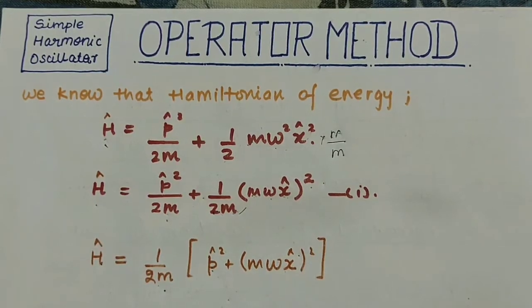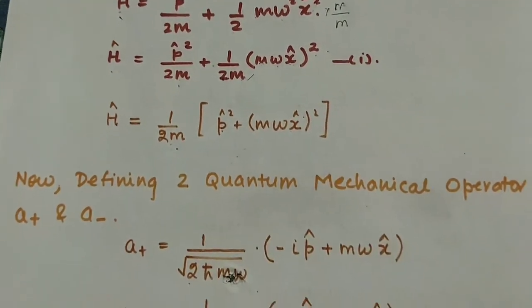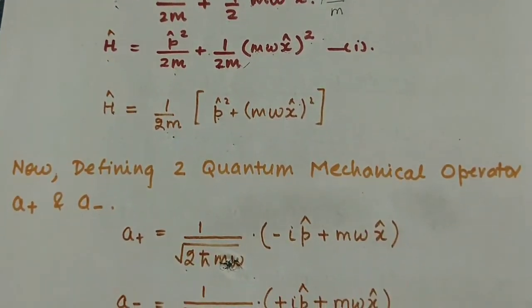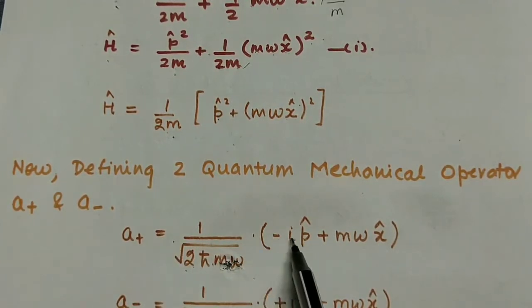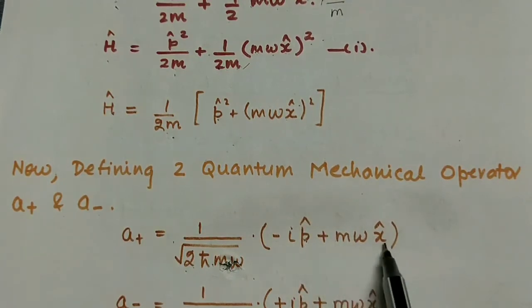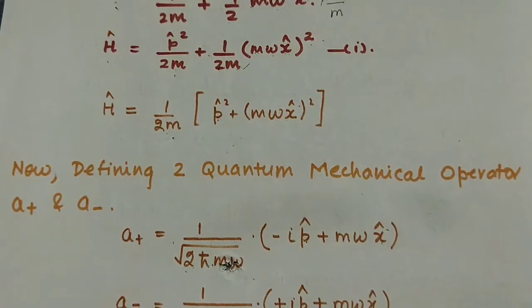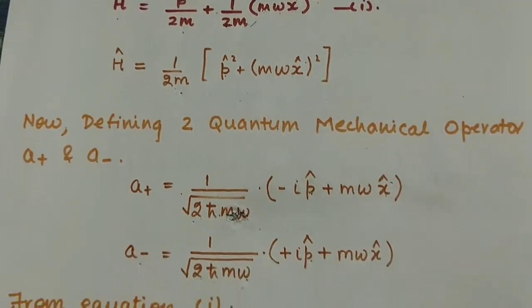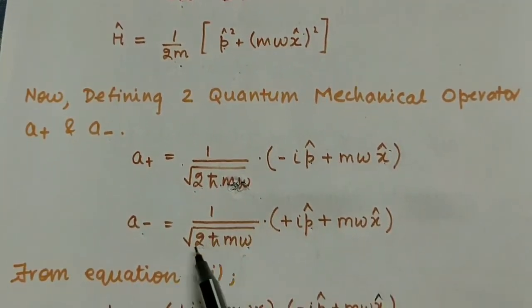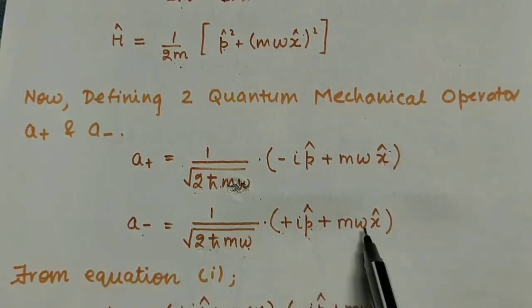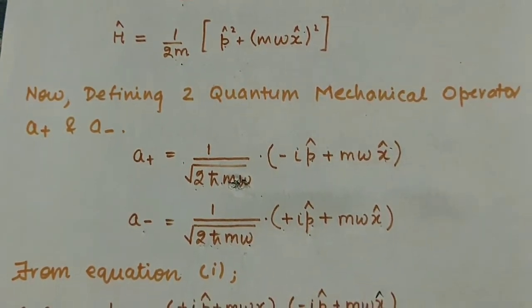Now we define two quantum mechanical operators, a+ and a−. The operator a+ has the value 1 over √(2ħmω) times (ip + mωx-cap), where p is the momentum operator and x is the position operator. The second operator a− is 1 over √(2ħmω) times (−ip + mωx-cap).